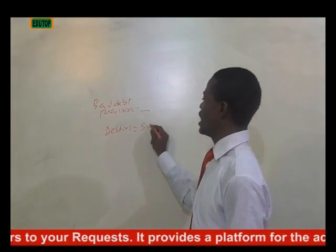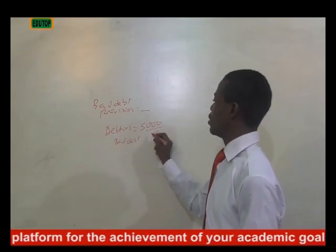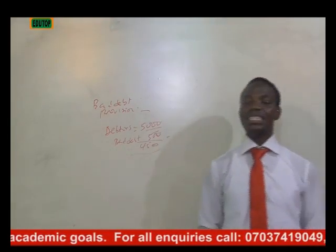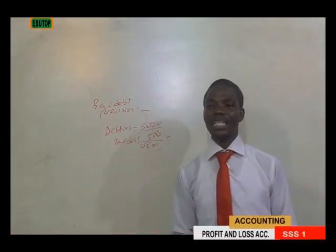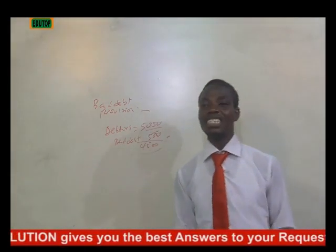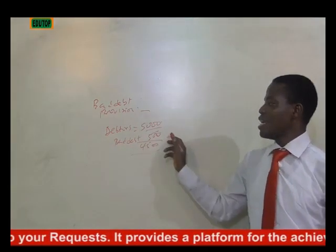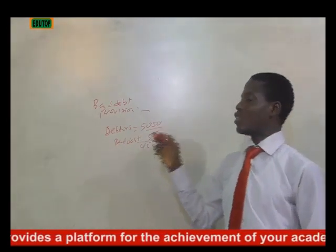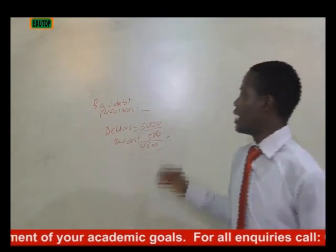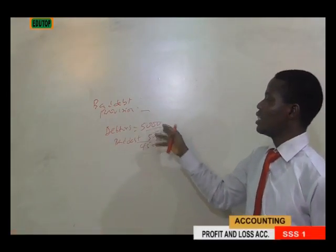Bad debt is the debt you are not expected to collect again, and that is why it is written off in the profit and loss account. There may be two types of bad debt: one given in the trial balance and one given in the additional information. If one is given in the additional information, you treat it and take it back to your debtors, deducting it from the debtor balance — so if 500 is not collectible, you deduct it and the debtor balance reduces accordingly.